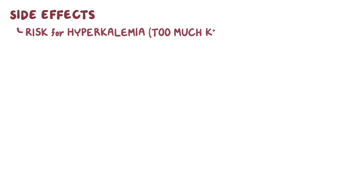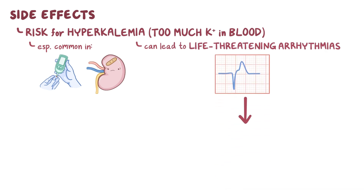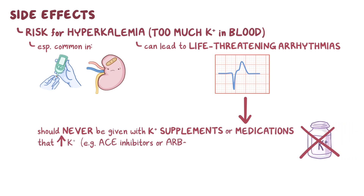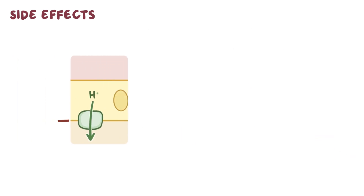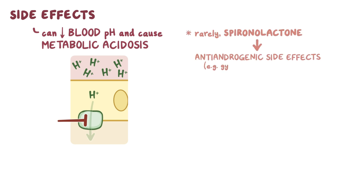Since these medications spare potassium, there's a risk for hyperkalemia — too much potassium in the blood — which is especially common in individuals with diabetes or renal impairment. High blood potassium levels can lead to life-threatening arrhythmias; therefore, these medications should never be given with potassium supplements or other medications that increase potassium, like ACE inhibitors or ARBs. Since they also block proton pumps in alpha-intercalated cells, these medications can cause a buildup of hydrogen ions in the blood, lowering blood pH and causing metabolic acidosis. Very rarely, spironolactone can cause anti-androgenic side effects like gynecomastia or impotence.